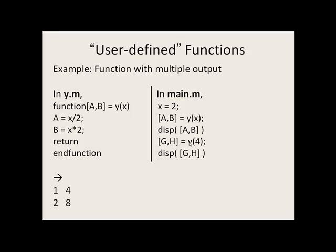We now call y again and pass the value 4 to the function. So x gets the value 4. 4 divided by 2 is 2, and 4 times 2 is 8. That gets stored in a and b and sent back as output to the main program. a has the value 2 — it's the first item — and this gets passed to g, which gets the value 2. b, the second item, gets the value 8, and when we display it on the screen, we display 2 and 8.